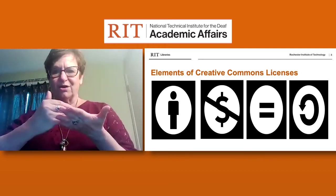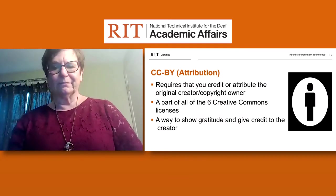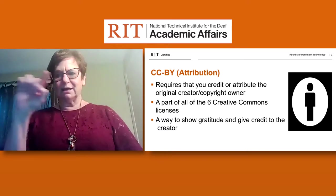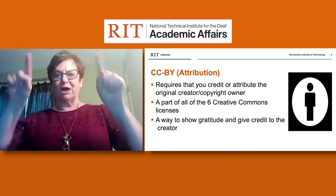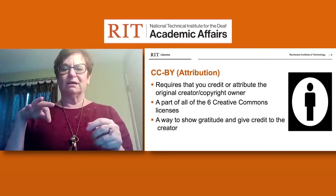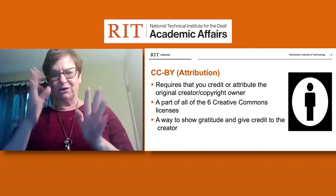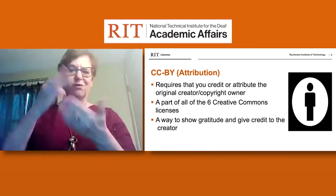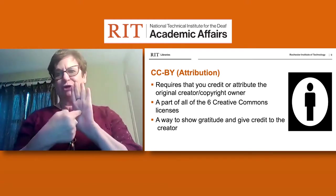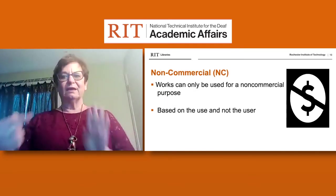Now I'd like to explain the elements of Creative Commons licensing. The CC-BY attribution icon means you need to give credit to or cite the original creator when you borrow or share their work. It's part of all 6 Creative Commons licenses and is the most common one — you need to show gratitude and give credit where credit is due.